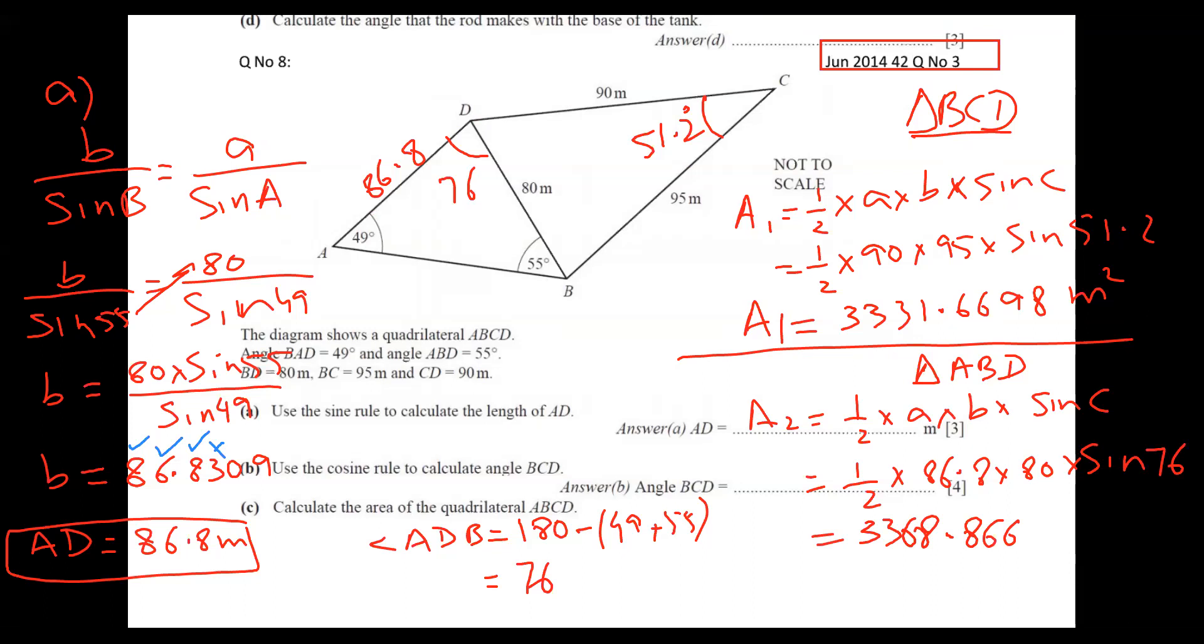And my answer is very clear. Now I will add both because I need a full quadrilateral area. Quadrilateral means both triangles. So area of the quadrilateral, or I'm writing ABCD shortly. So just add them. So this value plus 3331.6698. So answer is coming 6,700.53. But we need 3SF, you know. 3SF means I need first digit, I need second and third, and fourth I don't want. Which I don't want - bigger than four? Not at all. So answer is 6,700 meter squared is the answer for the whole diagram.